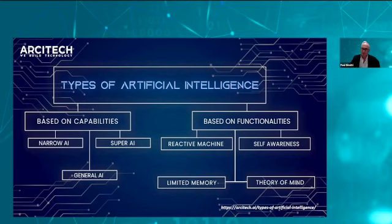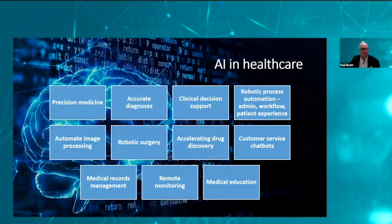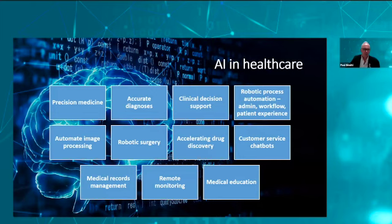In the future, with superintelligence and general AI, we will see self-awareness — where the machine learns about its own actions — and theory of mind, where it develops an independent progression of function. Artificial intelligence is already used widely in healthcare, including in precision medicine, accelerating drug discovery, robotic surgery, customer service chatbots, and remote monitoring.